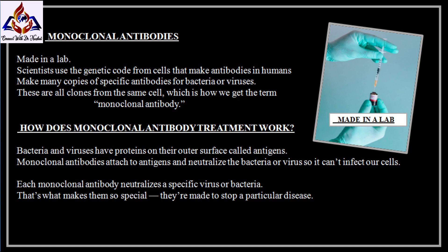How are monoclonal antibodies made? They are made in a lab. Scientists use the genetic code from cells that make antibodies in humans to make many copies of specific antibodies for bacteria or viruses. These antibodies are all cloned from the same cell, which is how we get the term monoclonal antibody.